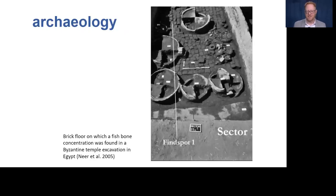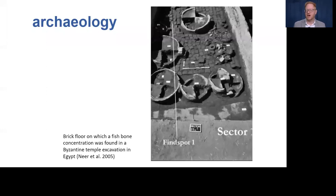The emergence of dried and fermented fish itself generally predates historical records, so archaeological research is particularly useful in understanding the origins of fish processing. In a series of articles, Van Nier and colleagues have reported on fish bone assemblages indicating the presence of sun-dried, salted, and pickled fish at ancient Roman sites located in Egypt. This illustration shows a Byzantine temple excavation in Egypt containing a brick floor on which a fish bone concentration was found.